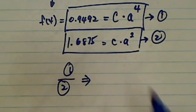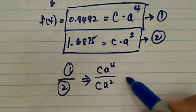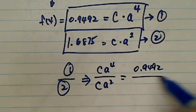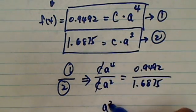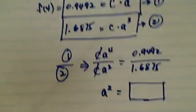So c a to the 4th divided by c a squared is equal to 0.9492 divided by 1.6875. C cancels, this one becomes a squared is equal to whatever this number is.